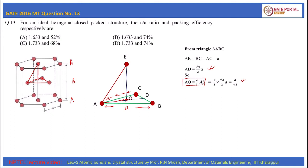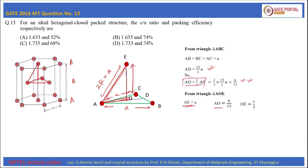Now let us consider triangle AOE. From this triangle, AE is basically 2r, which is equal to a. AO we have already calculated as a/√3, and OE is half of the total height of the unit cell, that is c/2. From the Pythagorean theorem we can write AE² = AO² + OE²,